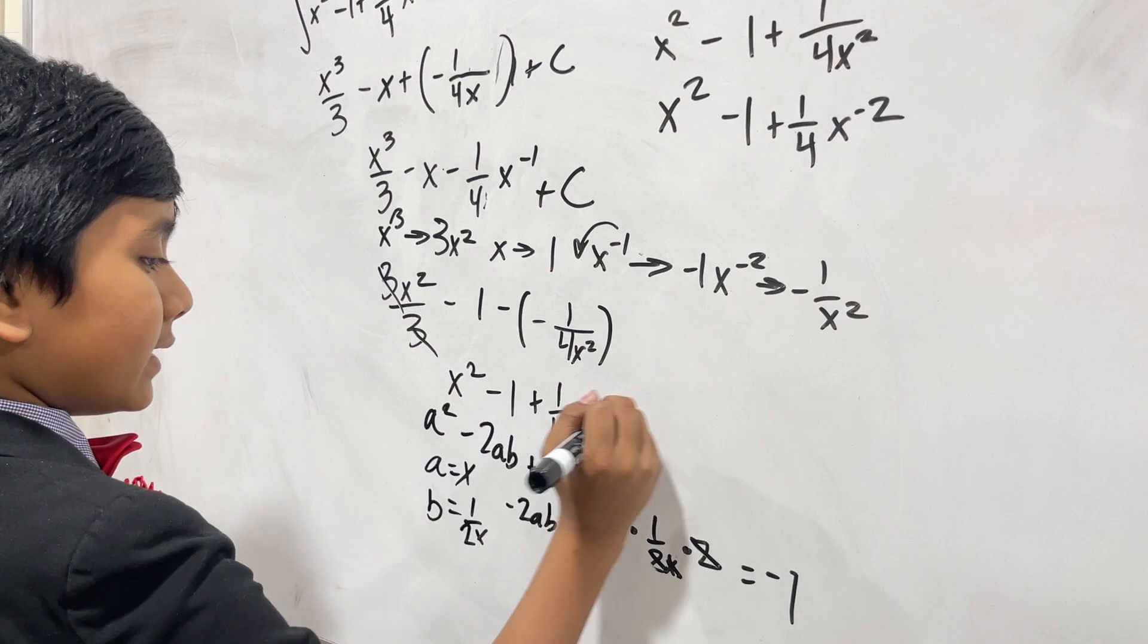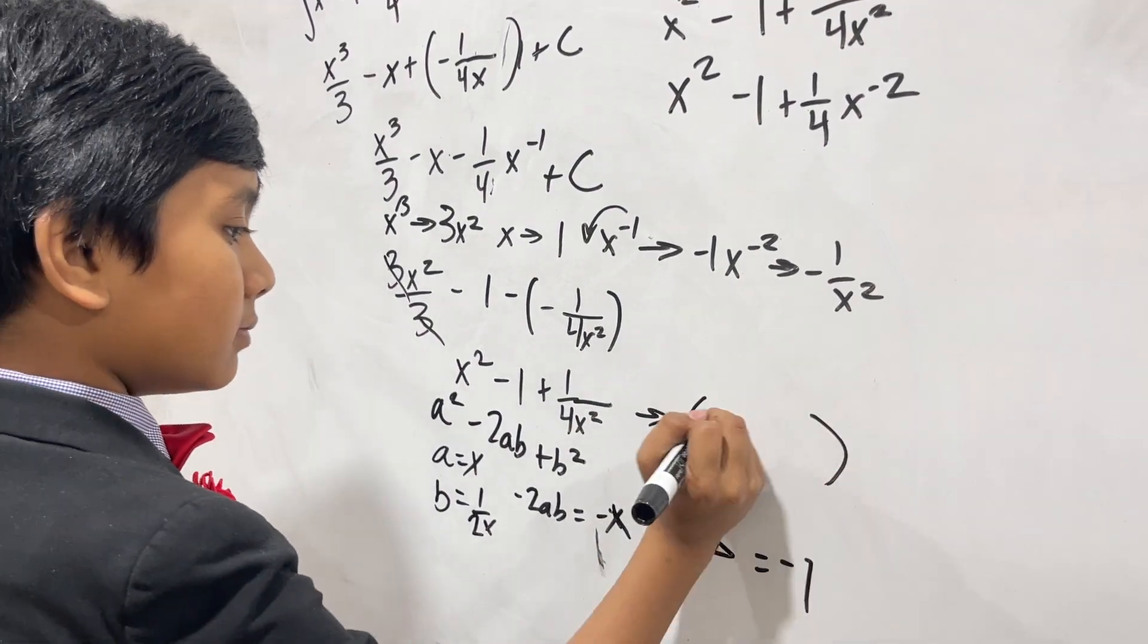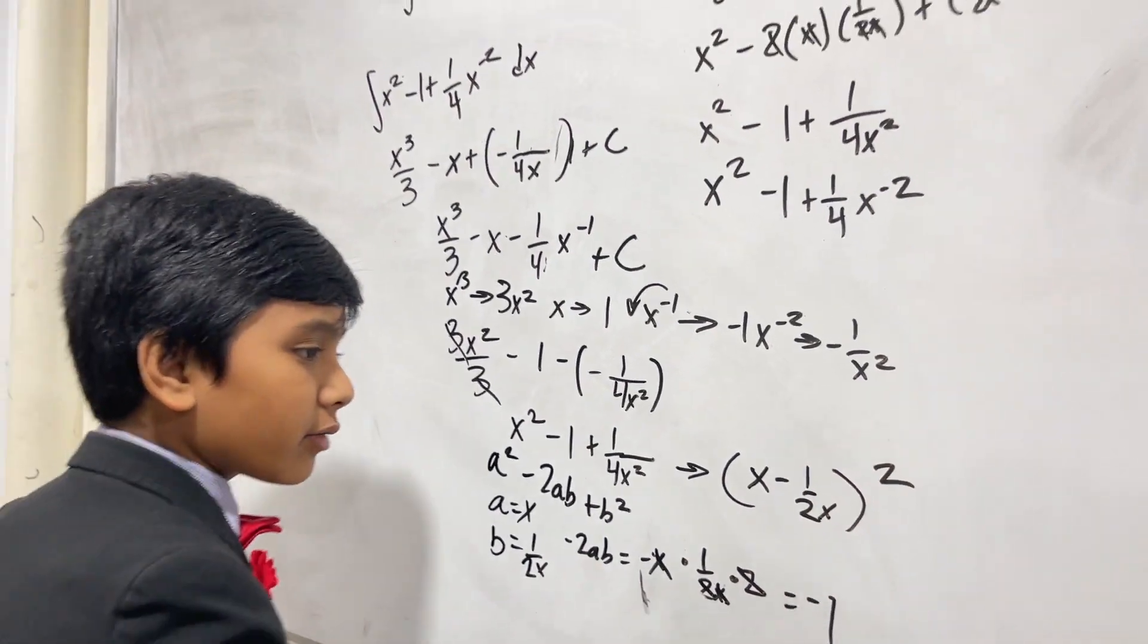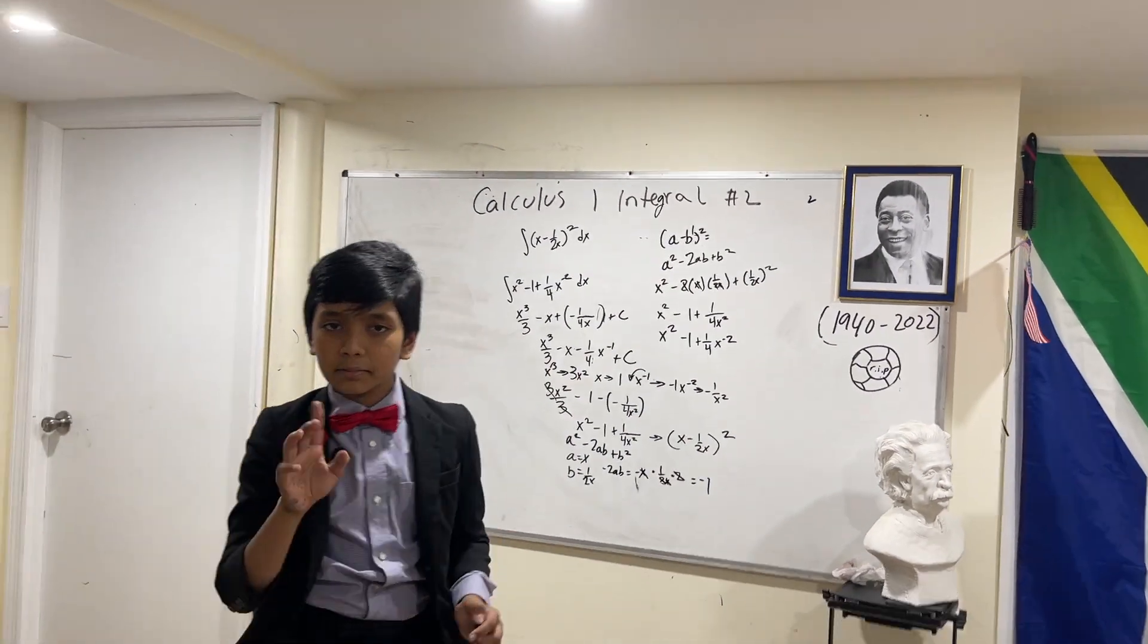So we have confirmed that this is simply just x minus 1 over 2x squared. That's it. Thank you everybody for watching, and we'll see you in the next one. Bye.